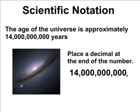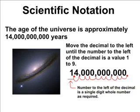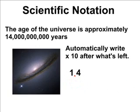The next step is we have to move the decimal all the way to a position so that the number in the very front of our decimal is a single digit whole number, such as the number 1 or the number 2. We have to move it all the way to the left until it is in between the digits 1 and 4. So now we have the number 1.4 with a whole bunch of zeros at the end. All the zeros that we have remaining are unnecessary. If we truncate these zeros — or get rid of them — it does not change the value of our number. In math, we call this truncating the zeros.